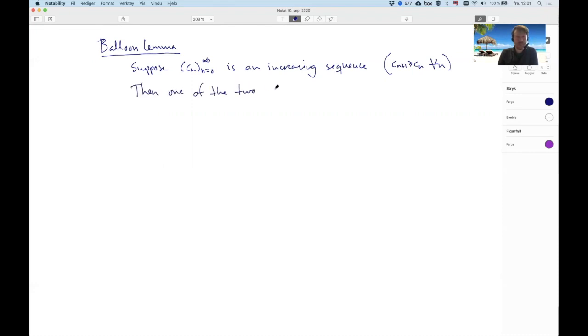One of the two following statements hold. One is that there exists a number m in the real numbers such that the cn are smaller than or equal to m for every n that's in the index set of cn. So from one to infinity.